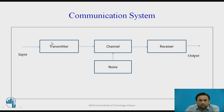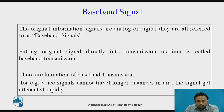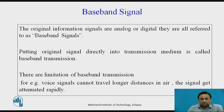So this is the total communication system: transmitter, channel, receiver, and noise. This is the basic block diagram for analog communication. Next we look at the baseband signal, or modulating signal. The original information signals — whether analog or digital — are all referred to as a baseband signal. Putting the original signal directly into the transmission medium is called baseband transmission.